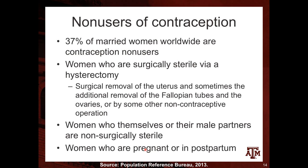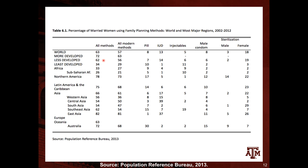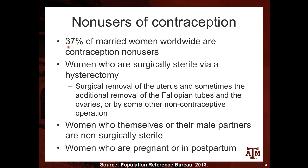When talking about the non-users of contraception, we know that 37% of married women worldwide are non-users. Going back to the previous table, this 37% represents women who are not using any methods, since 63% are using at least one kind of method. Out of this 37% of women not using any contraceptive method, there are several subgroups, one of which includes women who are surgically sterile.